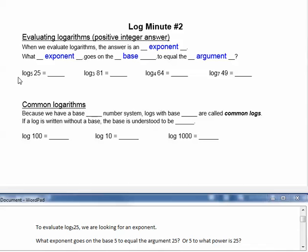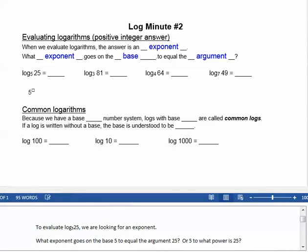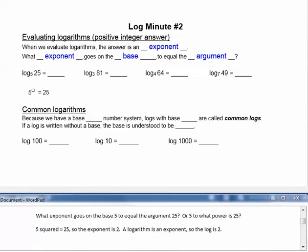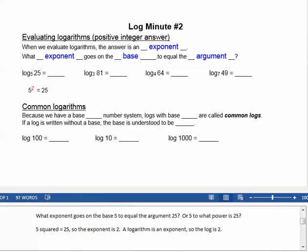To evaluate log base 5 of 25, we're looking for an exponent. What exponent goes on the base 5 to equal the argument 25? Or 5 to what power is 25? 5 squared equals 25, so the exponent is 2. A logarithm is an exponent, so the log is equal to 2.